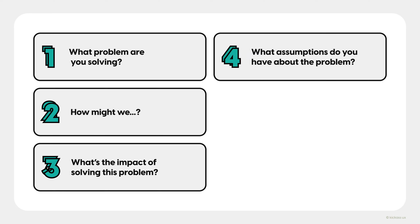Step four, state your assumptions associated with the problem. These are things you believe to be factually the case for your product. Stating your assumptions does two things: rather than keep this information in your head, it lists out what you and other teammates believe to be certain and allows you to analyze them from a more unbiased viewpoint. And two, it helps you decide whether or not these are things you need to validate through research. For example, if we're working for Airbnb on a feature that helps people plan trips together, one assumption might be that people expect to be able to split payments with others using Airbnb. By listing this out, it helps us evaluate whether or not we need to do research on a specific problem.